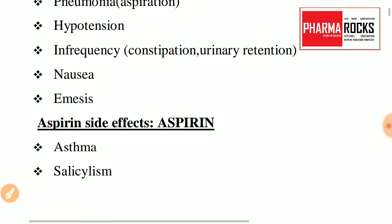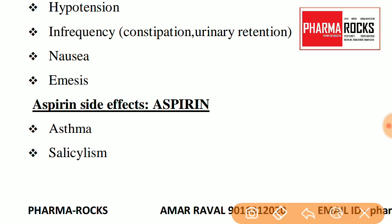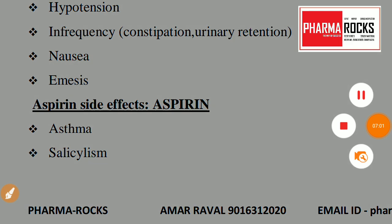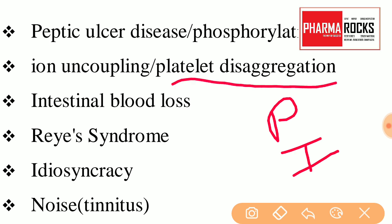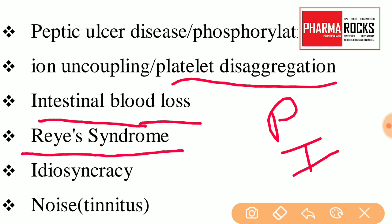Next is aspirin side effects. For aspirin side effects, you also remember the word ASPIRIN itself. A — asthma, S — salicylism, P — peptic ulcers or phosphorylation uncoupling, I — ion uncoupling meaning platelet disaggregation and intestinal blood loss, R — Reye's syndrome, which is a very famous side effect of aspirin, I — idiosyncrasy, N — noise, tinnitus. These are the side effects of aspirin.